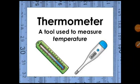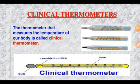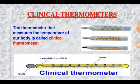In the last class we studied that a thermometer is the tool used for measuring temperature. Now we are going to study about the clinical thermometer. The thermometer that measures the temperature of our body is called the clinical thermometer, and this type of thermometer is used by doctors and nurses in hospitals to measure the body temperature of patients. A clinical thermometer consists of a bulb at one end, a tube inside filled with a liquid metal called mercury, and readings on the outside of the glass.